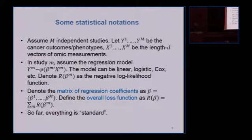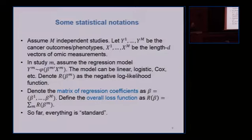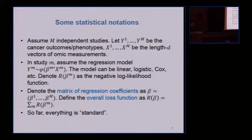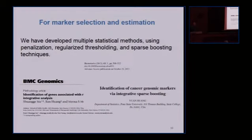A couple of statistical notations — I'm not going to bug you with the details. What's really important is that in the modeling stage, there is actually nothing new. We just take whatever classic models we worked with before. If it's a classification problem, it's a logistic regression; if it's survival data, you have a Cox model. What's really different from classic analysis is how you do the marker selection.